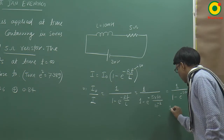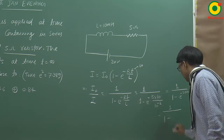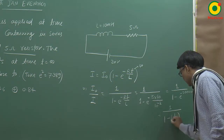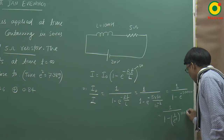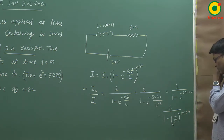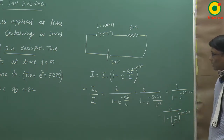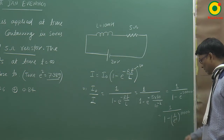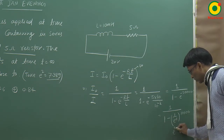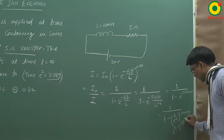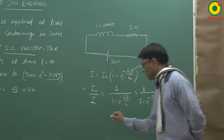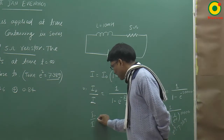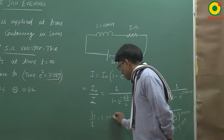इसको लिखा जा सकता है 1 divided by (1 - 1/e^(20,000))। अब e² का जो value है, वो question में बताया गया है: 7.389। तो e² = 7.389 रखने पर, i₀/i का जो value आता है।